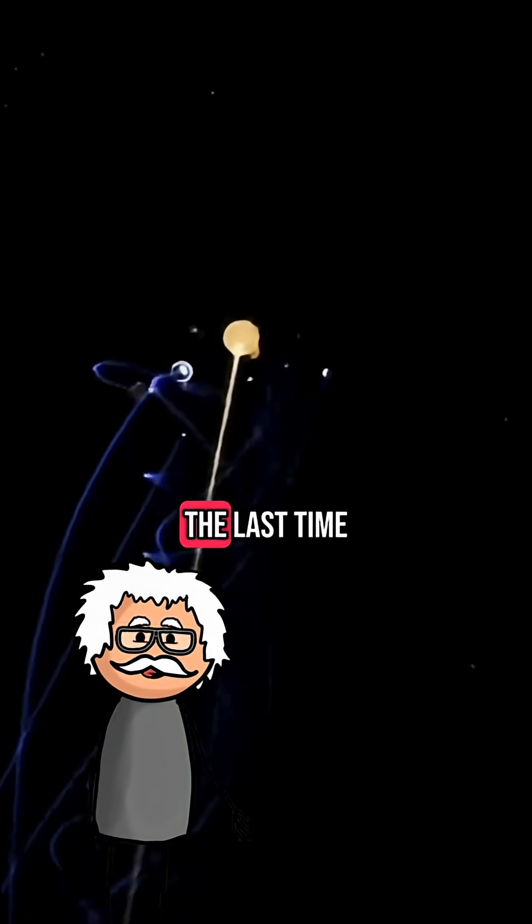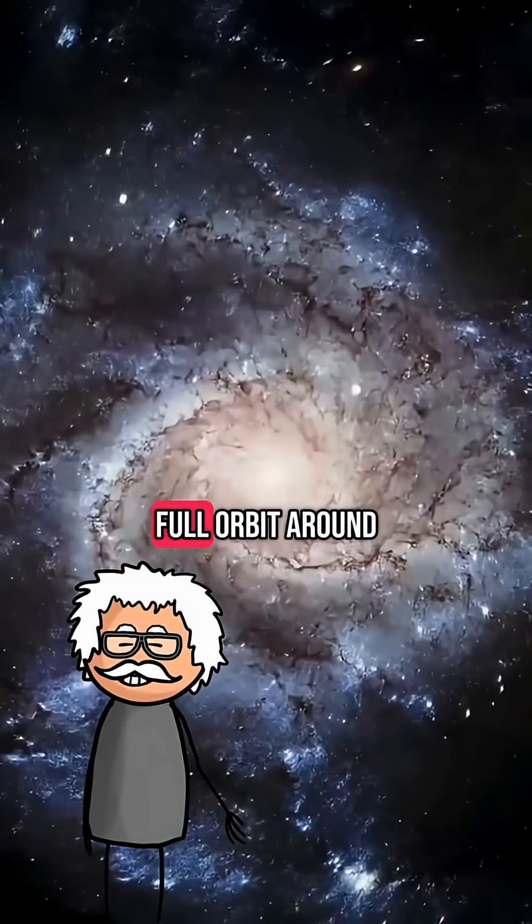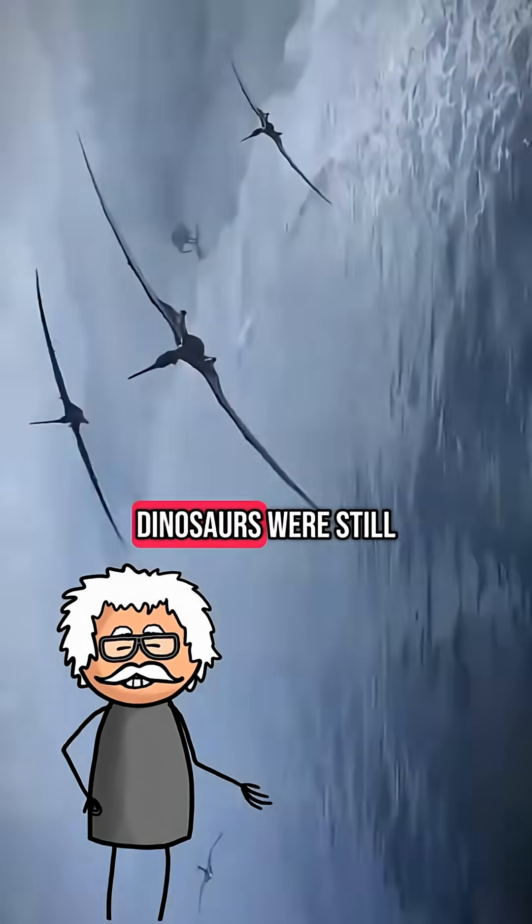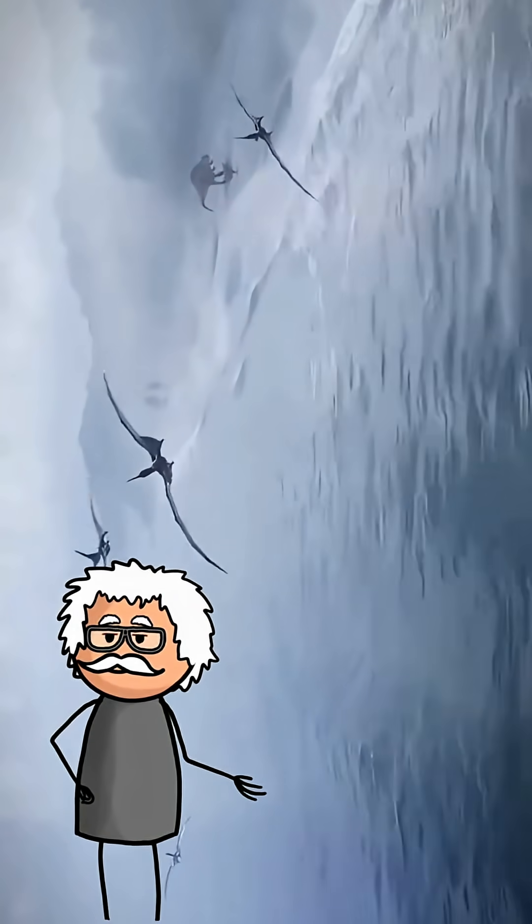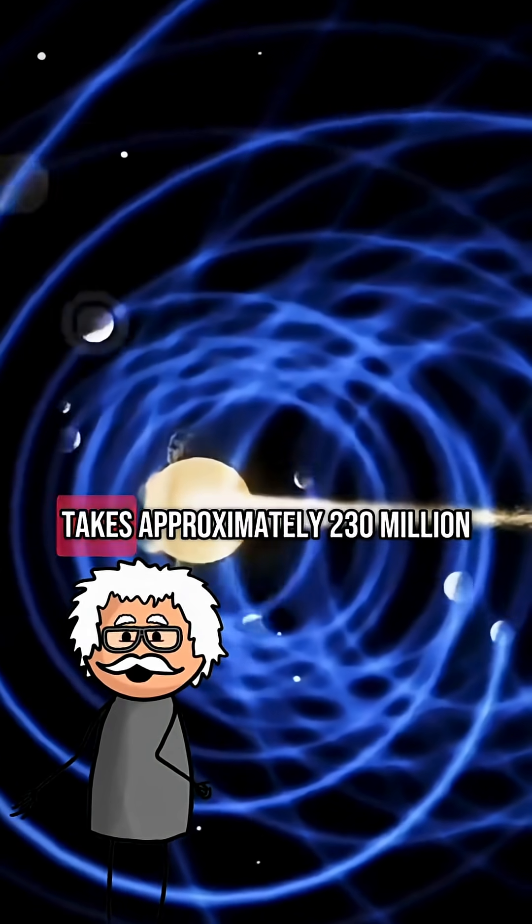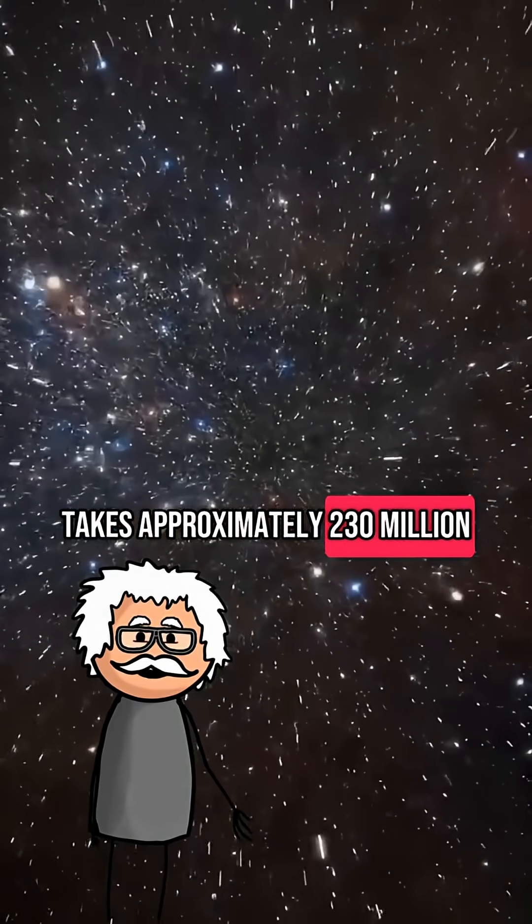To give you an idea, the last time the Sun and Earth completed a full orbit around the galaxy, dinosaurs were still roaming the planet. That's because one full orbit around the Milky Way takes approximately 230 million years.